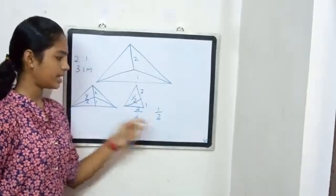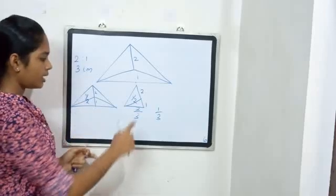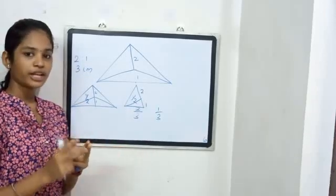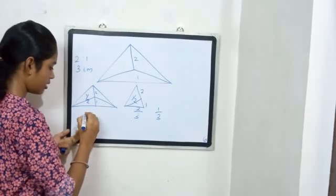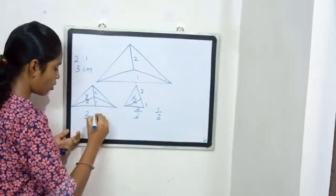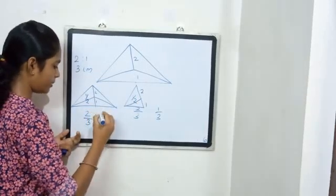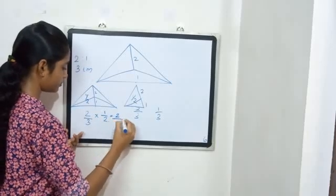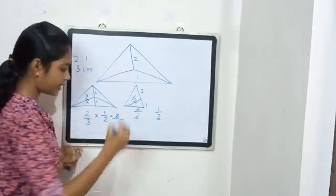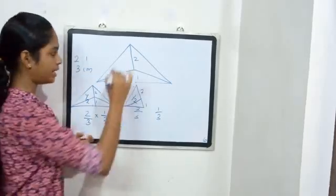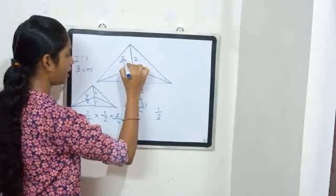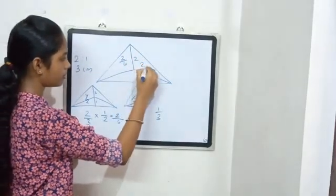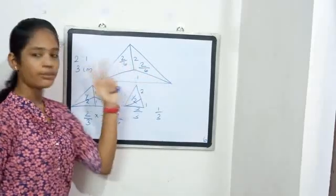We will be doing two-thirds times one-half, which gives two-thirds of one-half. Two-thirds multiplied by one-half returns two-sixths. That is two-sixths, because we have to do both steps.